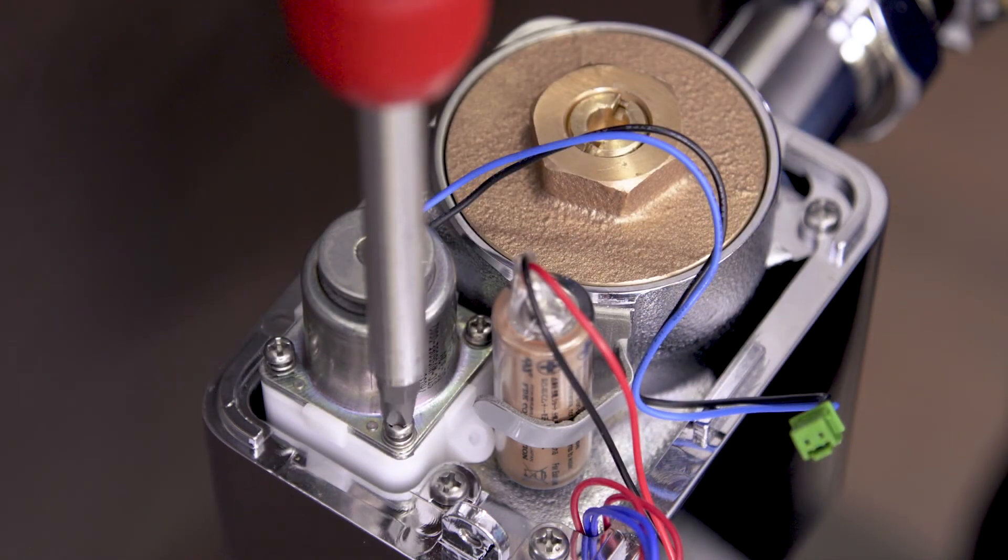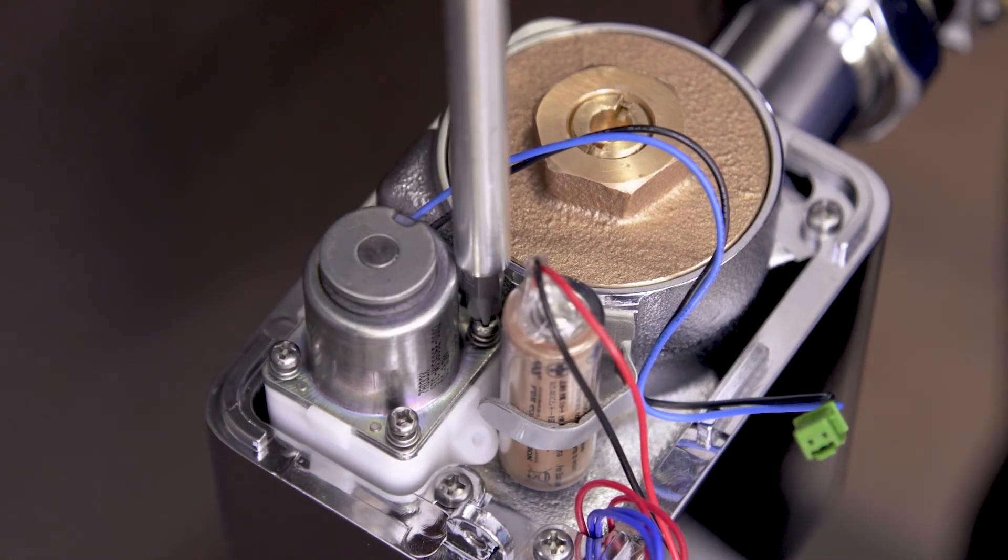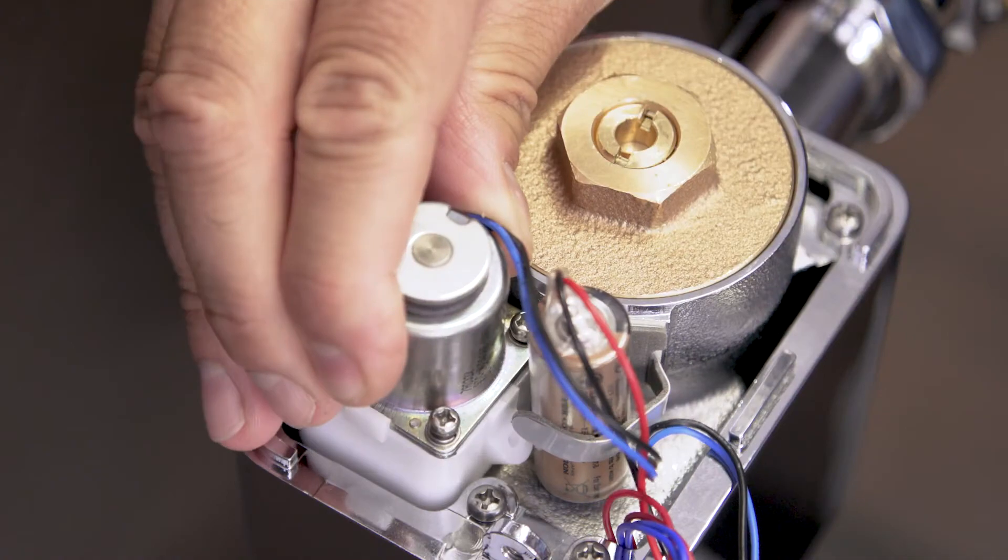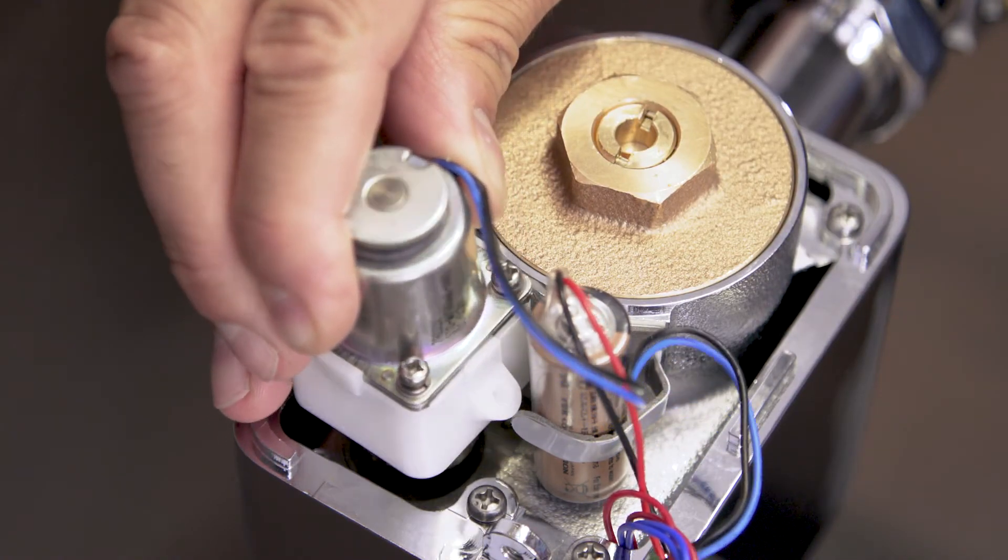Use a Phillips screwdriver to loosen the four mounting screws. Now remove and discard the old solenoid.